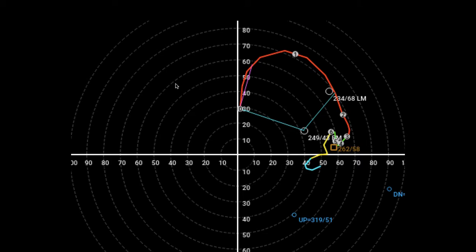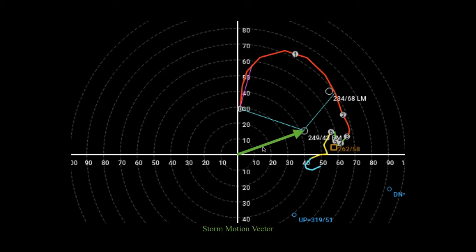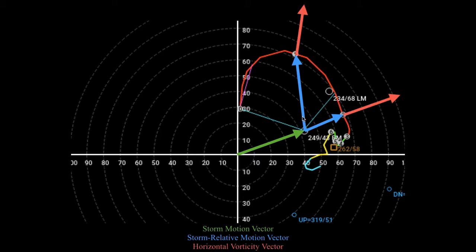Let's take a look at a case that has a lot of streamwise vorticity, shown on the screen here. Same process as before — the green arrow tells us what direction the storms actually want to move, which in this case is east-northeast at just over 40 knots, about 43 knots. And again, storm relative motion vectors: we draw the arrow from the open circle to the points we're interested in, the wind at 1 kilometer and 2 kilometers. In this case, you see that the vorticity vectors are now pointing almost in the same direction as the storm relative motion vectors. This indicates an environment where storms, instead of splitting, will tend to rotate more intensely as updrafts become more and more mature.